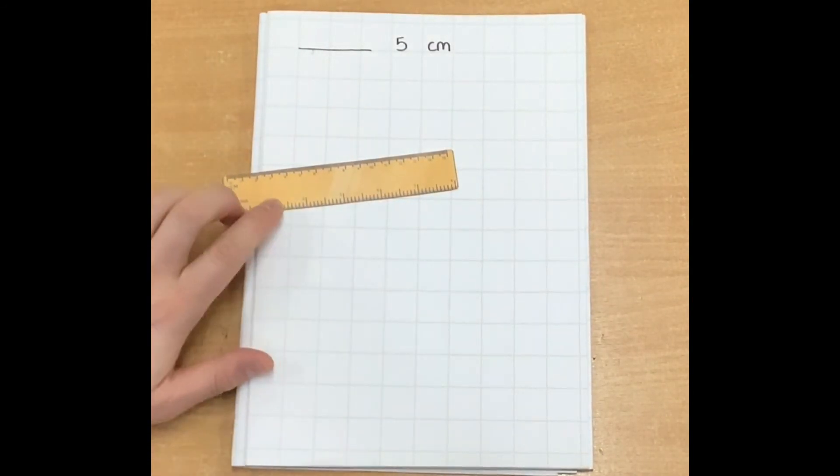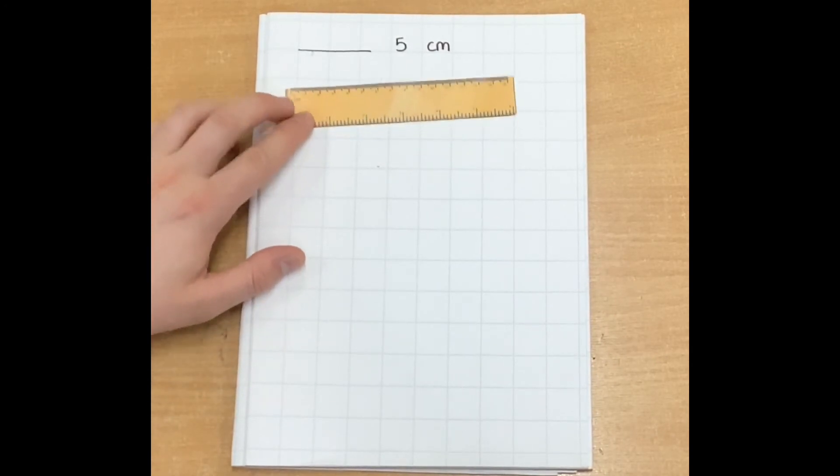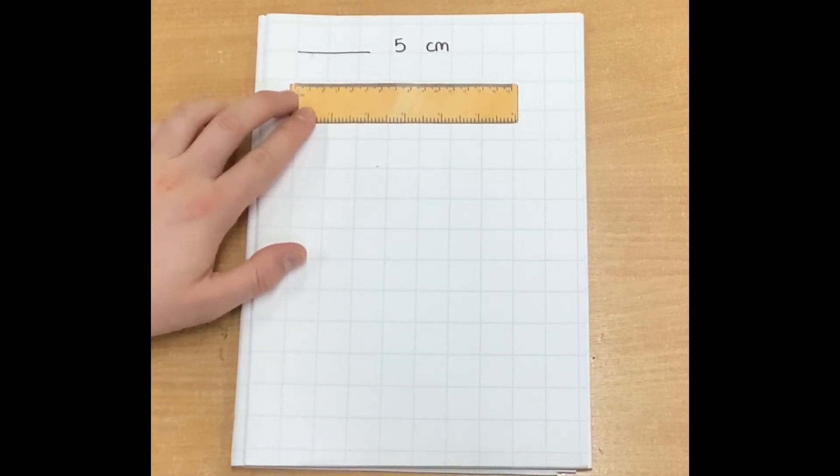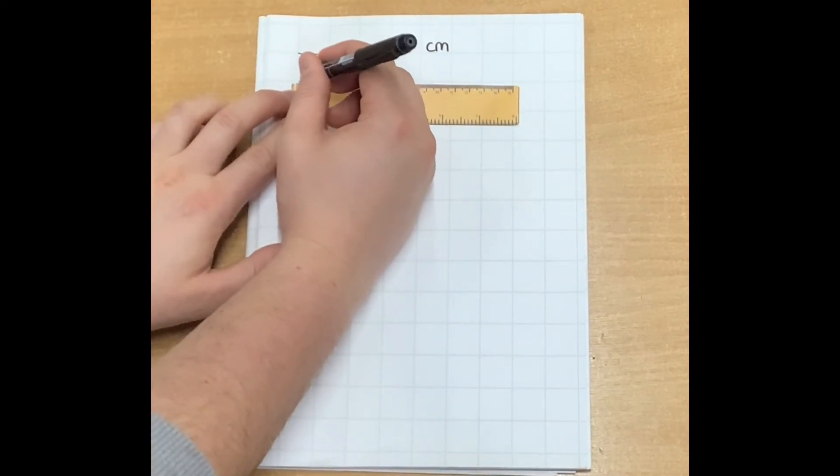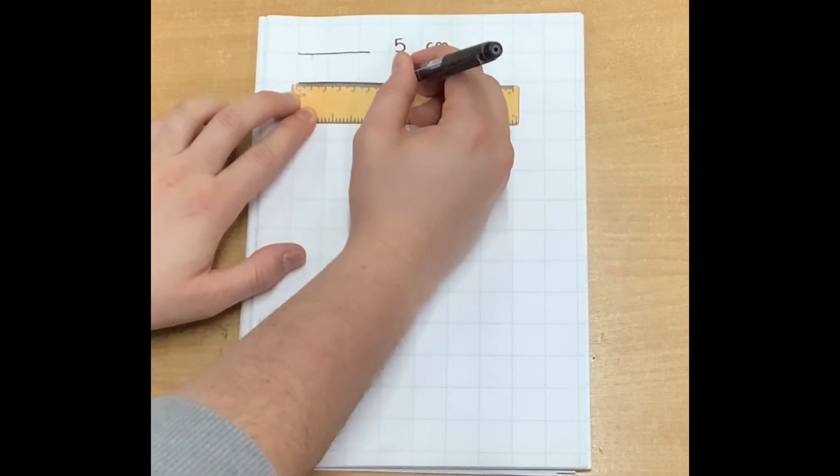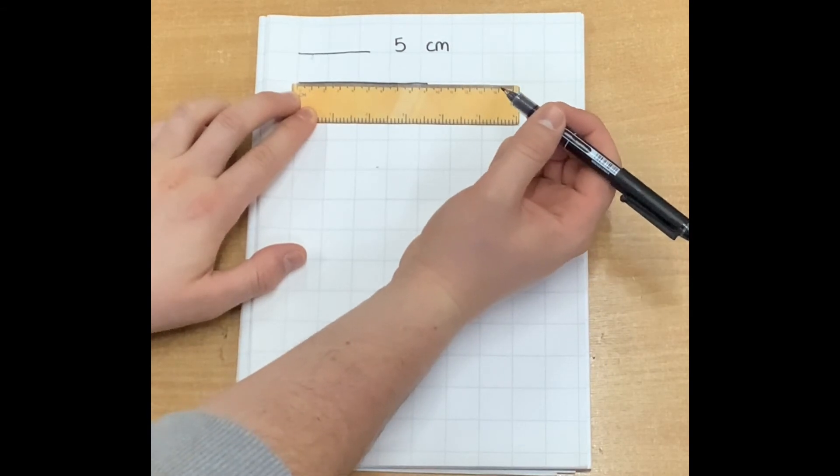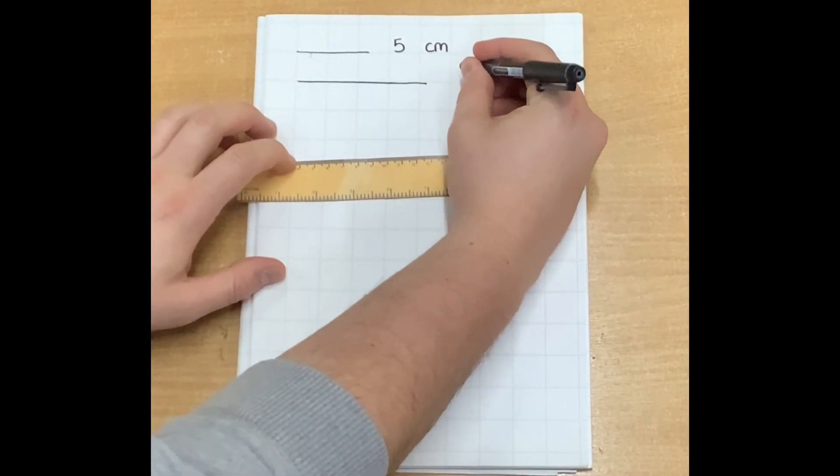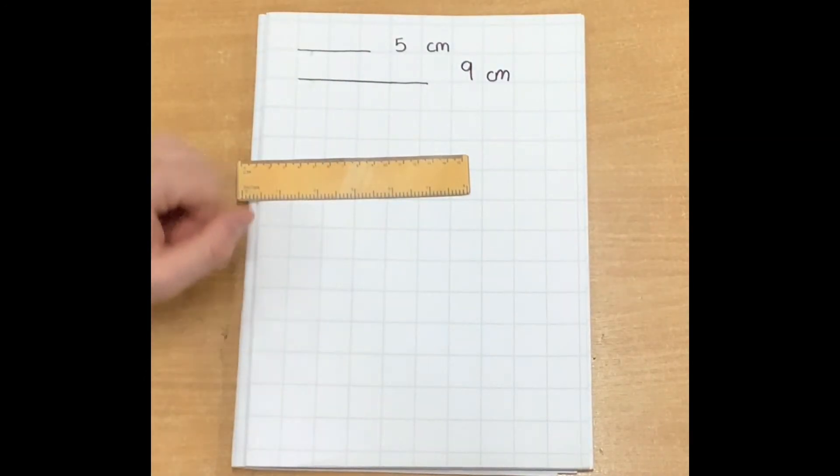I'll give you another one. Can you do me a line that is nine centimeters long? Do your line again, this time remember start at the zero, not at the end of the ruler. Go all the way along, all the way along, so you get to the nine. Looks good to me. And I'm gonna write here nine centimeters.